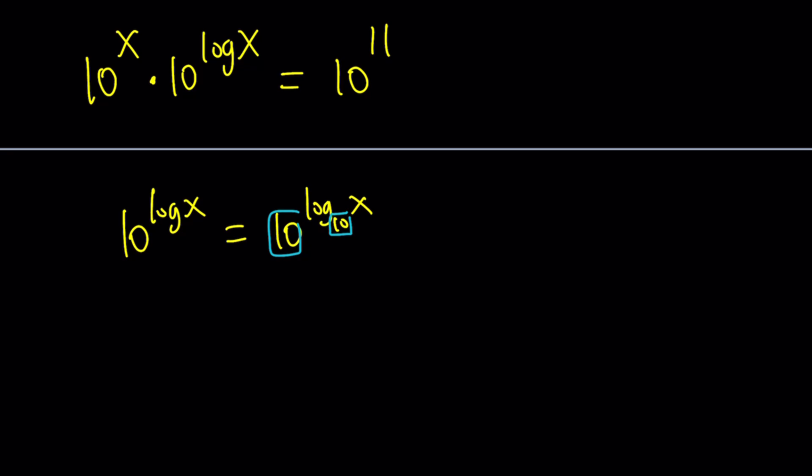Think about it. When you're logging some number with base 10, you're basically asking the question 10 to the power what number equals that x, right? And then you're doing 10 to the power that number, which should give you x. So this should be x. Really? Yeah, they do cancel out.